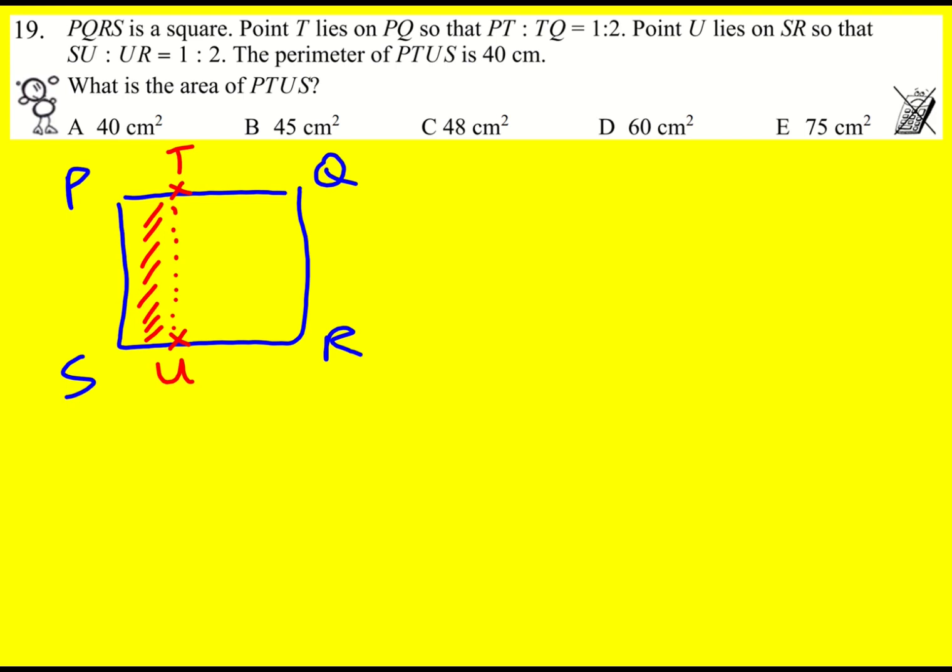Now I'm going to come back to the ratio bit. So if it's in the ratio 1 to 2, then if this is x, then TQ is 2x, and this is also x, and this is 2x.